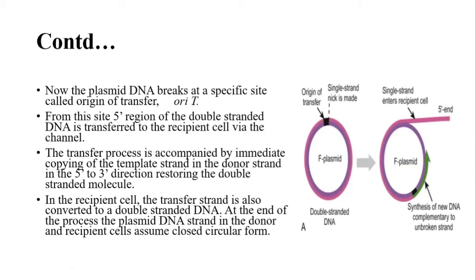When direct cell-to-cell contact is established between the bacterial cells, the plasmid DNA breaks at a specific site known as the origin of transfer. From this site, the 5' region of the double-stranded DNA is transferred to the recipient cell, and this transfer process is accompanied by immediate copying of the template strand in the 5' to 3' direction. In the recipient cell, the transferred strand is also converted into a double-stranded DNA. At the end of this process, the plasmid DNA strand in both the donor cell and recipient cell assumes a closed circular form.